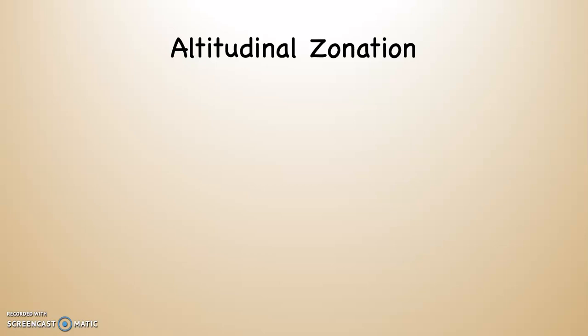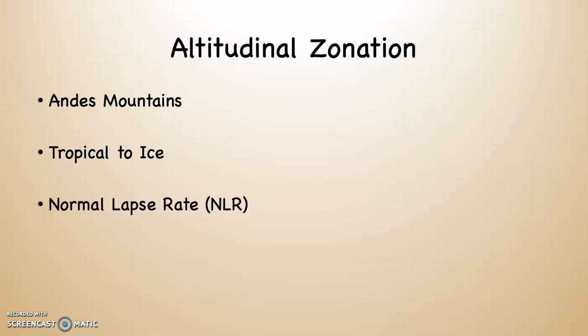Altitudinal zonation describes the changes in agricultural and life zones along the slopes of the Andes Mountains. The Andes are the second highest mountain range on earth, with peaks well above 20,000 feet, and it's the longest mountain range above sea level. Because much of the Andes lies in the tropical zone, the bottom and eastern side features the Amazon and a tropical landscape, while the peaks are so high they have glaciers on top.